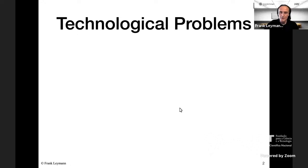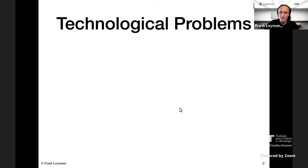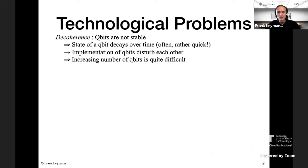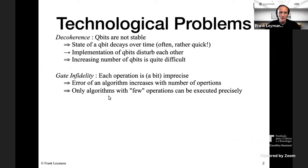What are the current technological problems with quantum computers? First, today's quantum computers suffer from decoherence — the qubits are not stable, the state of the qubits decays over time, implementations of qubits disturb each other, and increasing the number of qubits is very difficult. The next problem is gate infidelity: each operation is a little bit imprecise, meaning errors in quantum algorithms increase with the number of operations, and only algorithms with few operations can be executed precisely these days.